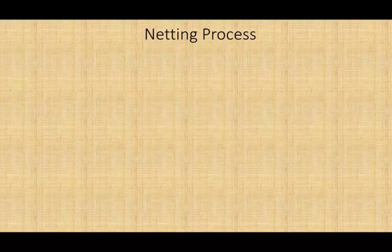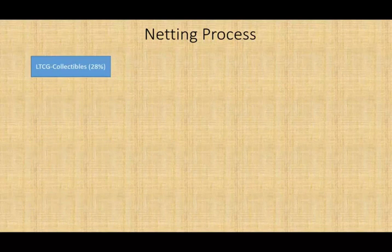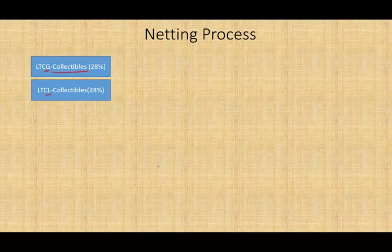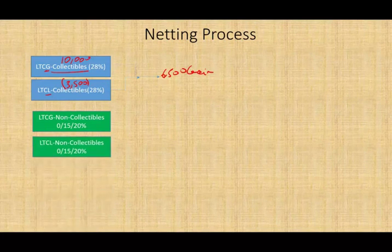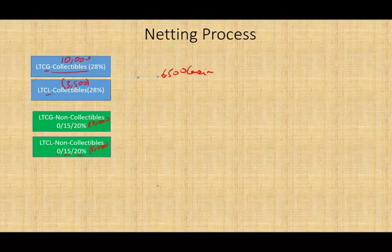Now let's talk about the netting process. When netting, you're going to have two long-term capital gain categories. First, you net the long-term collectibles — you could have a gain or a loss. For example: $10,000 of gains and $3,500 of losses nets to a $6,500 gain. Then you net the long-term non-collectible — the gains and losses subject to 0%, 15%, and 20%. For example: $20,000 of gains and $8,000 of losses gives a net gain of $12,000.